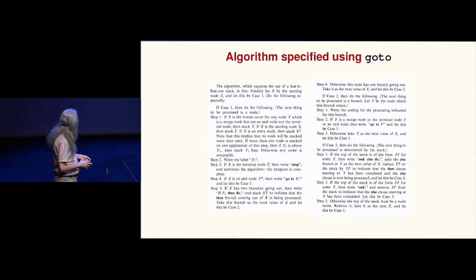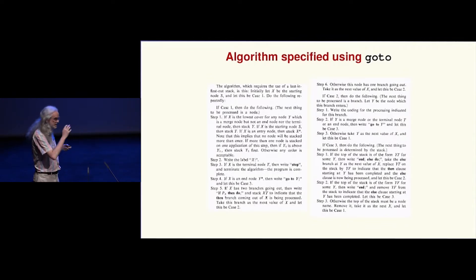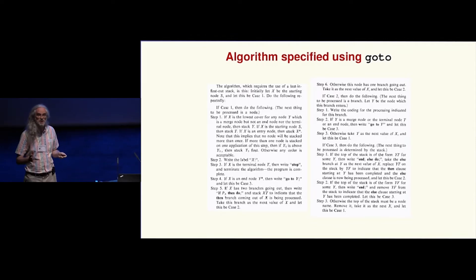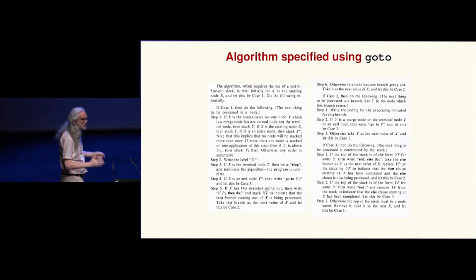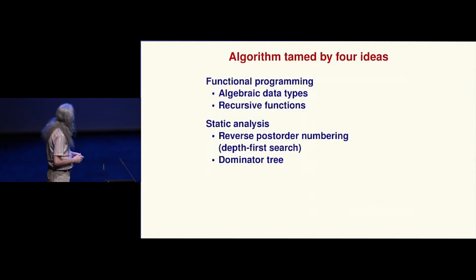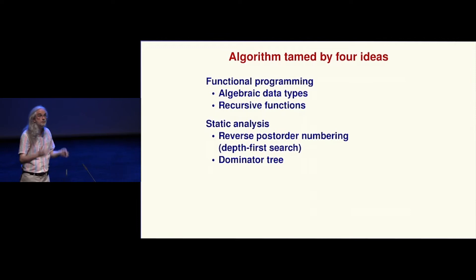If you've read The Art of Computer Programming by Knuth, this is the style of the time. It's got three cases and we do things like 'if x is the terminal node t then emit stop and terminate' or 'write goto y out as a side effect.' There's a nice little hint right at the beginning: the algorithm requires the use of a last-in-first-out stack. Everybody here knows that means there must be a recursive function somewhere.